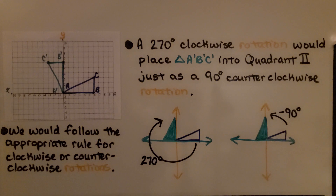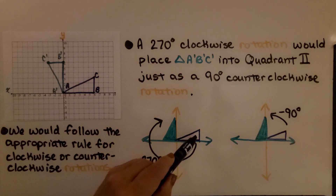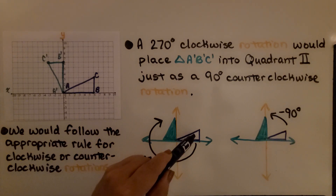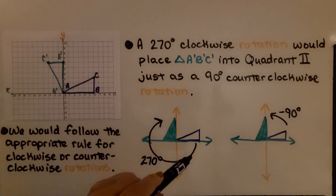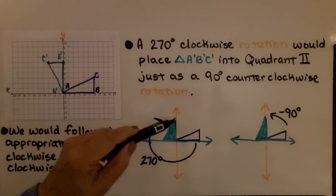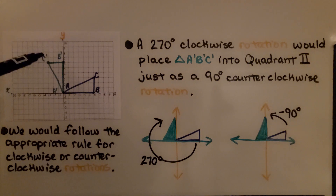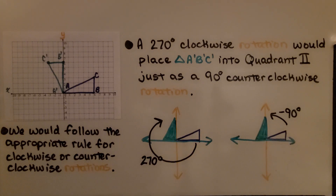We follow the appropriate rule for clockwise or counterclockwise rotations. If we rotate triangle ABC all the way around 270 degrees clockwise — going 90, 180, 270 — it lands at A'B'C'. And if we just go negative 90 degrees counterclockwise, it ends up in the same place.